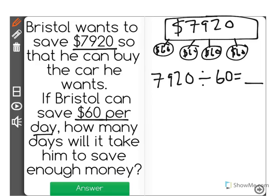Now here what we can do is we could use our long division strategies. $7,920 divided by $60.